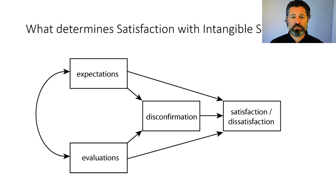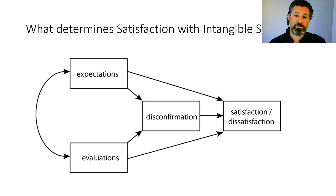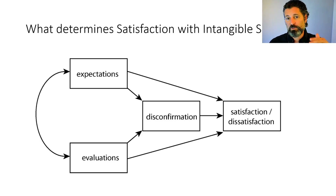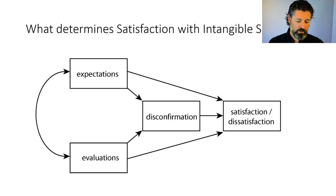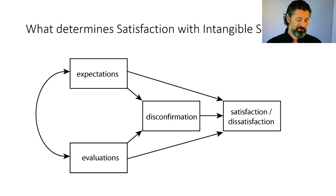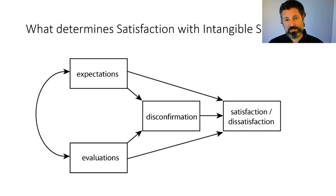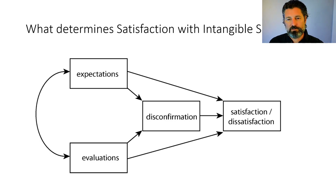When services are very intangible, expectations drive satisfaction. If we expect it to be good and it's hard to determine objectively whether it was, we let expectations drive our judgment. For example, an LED light bulb rated for 100,000 hours — after eight years, you probably aren't tracking usage hours. When it goes out, you'd assume it met the threshold. When objective performance is hard to quantify, we rely on expectations.